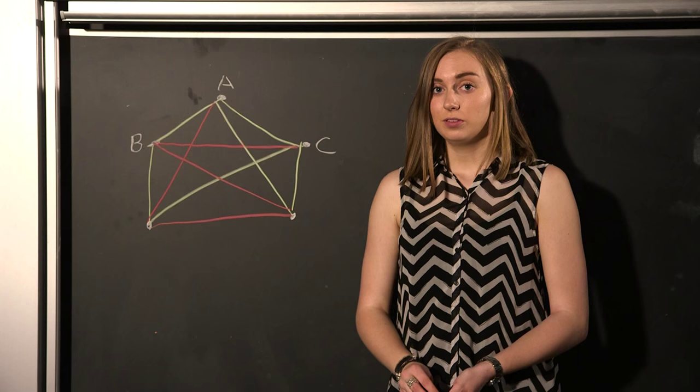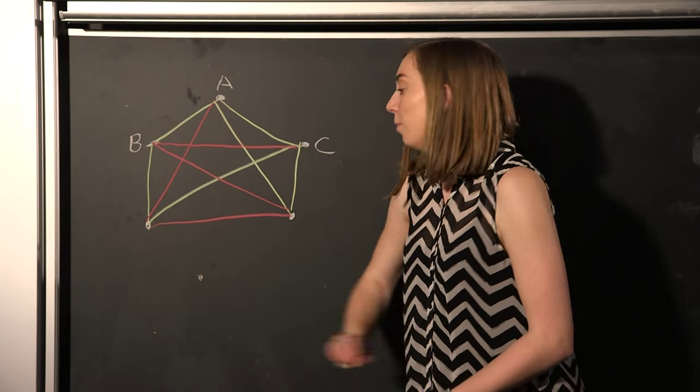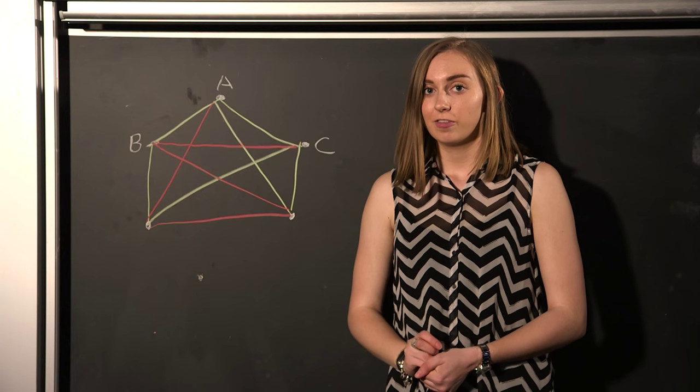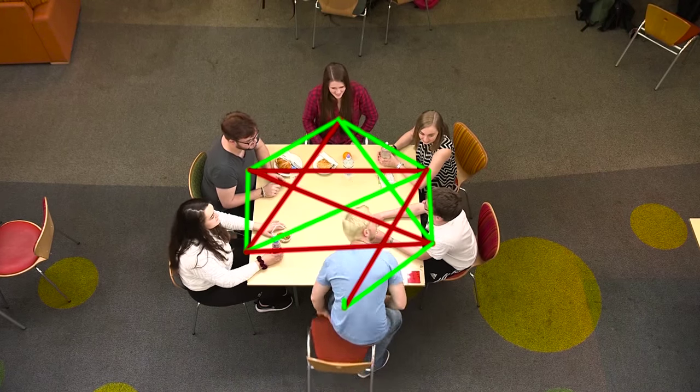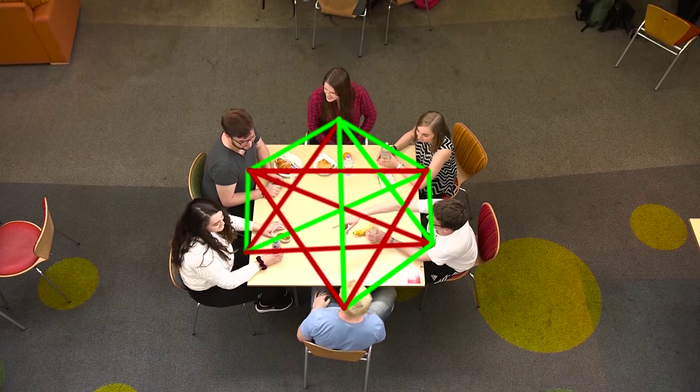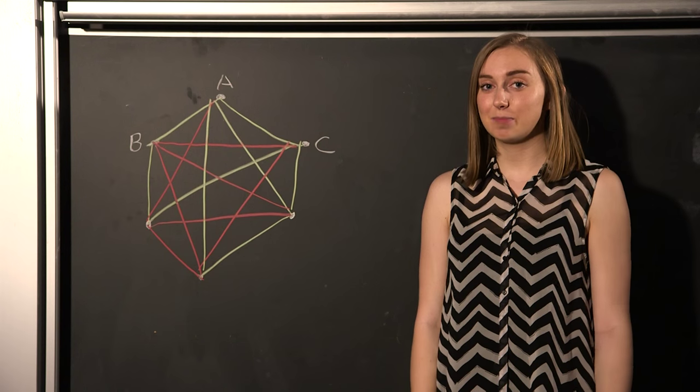But when you get to six people, a pattern starts to emerge on your graph and you get triangles which have all three sides the same colour. So six is the magic number.